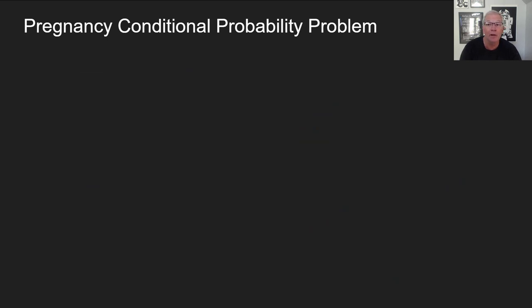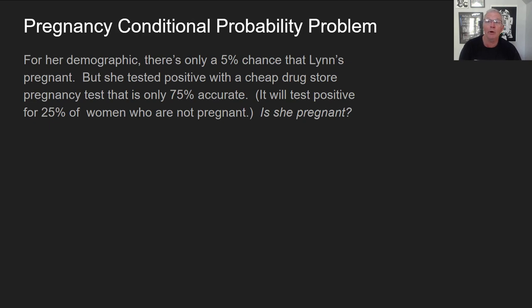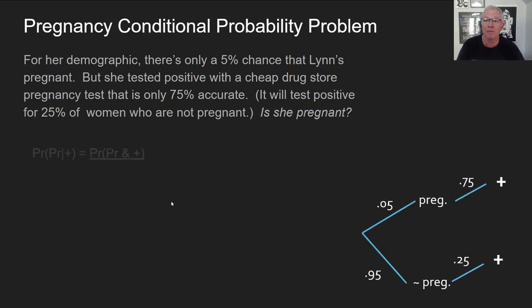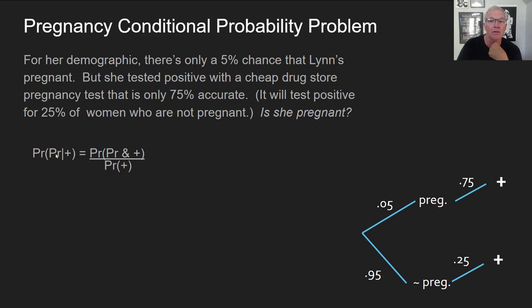Here's a more relevant and complicated problem. For her demographic, there's only a 5% chance that Lynn is pregnant. But she tested positive with a cheap drugstore pregnancy test that's only 75% accurate. The question is: is she pregnant? We're asking what's the probability that she's pregnant given that she tested positive. That equals the probability that she's pregnant and she tested positive over the total probability of testing positive.